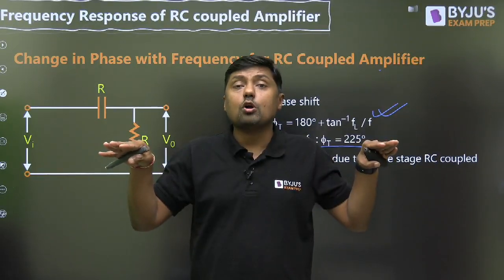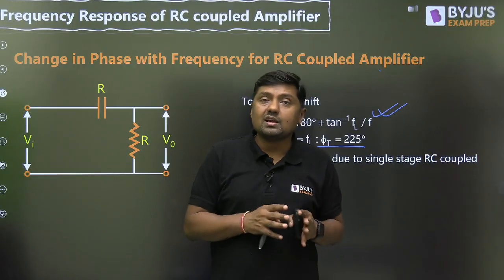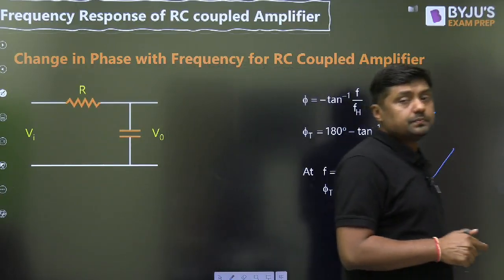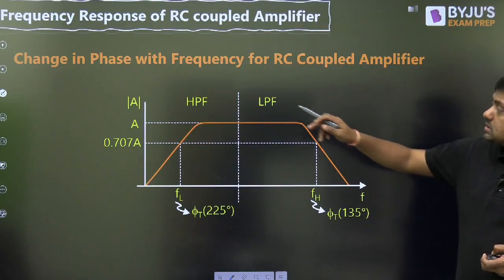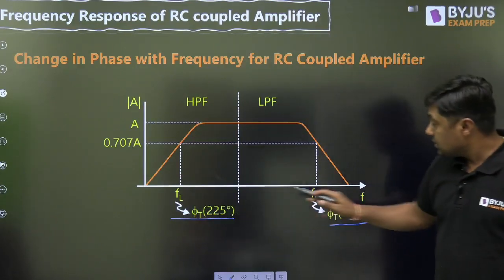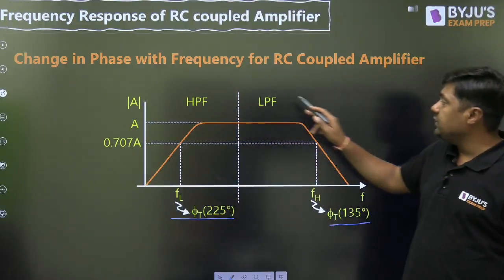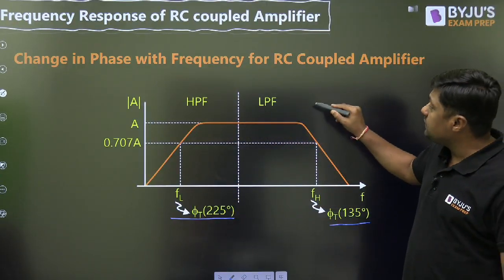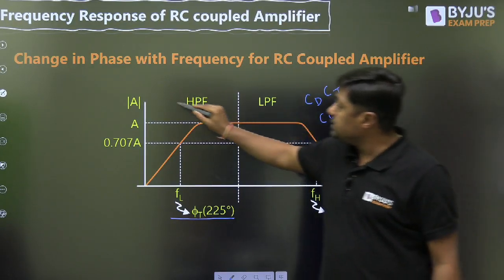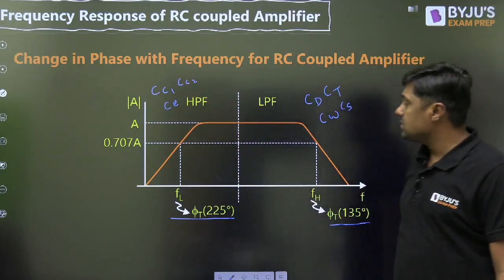In mid frequency, gain is almost constant and phase is almost constant. That is why normally we do the analysis at mid frequency. The high pass filter is on the low frequency side; the low pass filter is on the high frequency side. At FH the phase change is 135 degrees; at FL the phase change is 225 degrees. Gain at the high frequency side falls because of internal capacitances — diffusion, transition, wiring, and stray. Gain at the low frequency side falls due to CC1, CC2, and CE, the bypass capacitor.